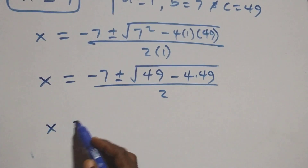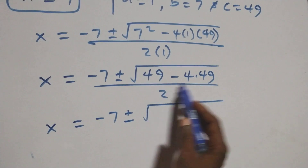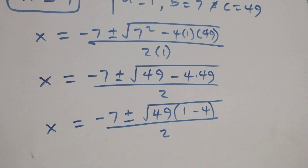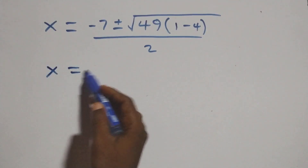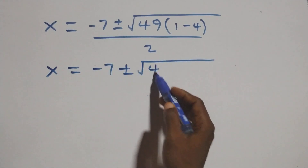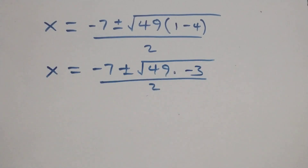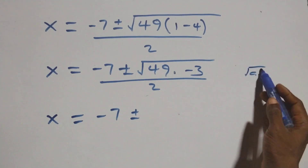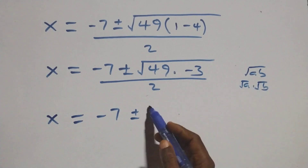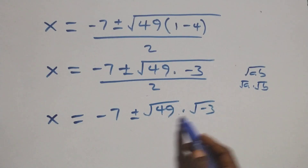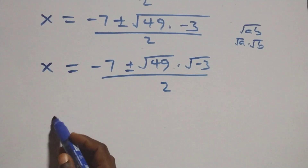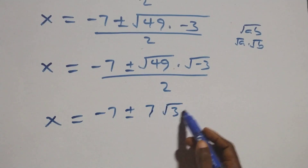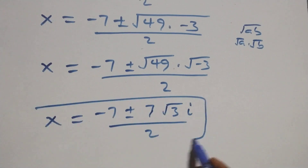Which implies x equals to minus 7 plus or minus square root of 49 — factoring out 49 — we have 49 times (1 minus 4), which is minus 3, over 2. So x equals to minus 7 plus or minus square root of 49 times minus 3, over 2. This also gives us two complex solutions.